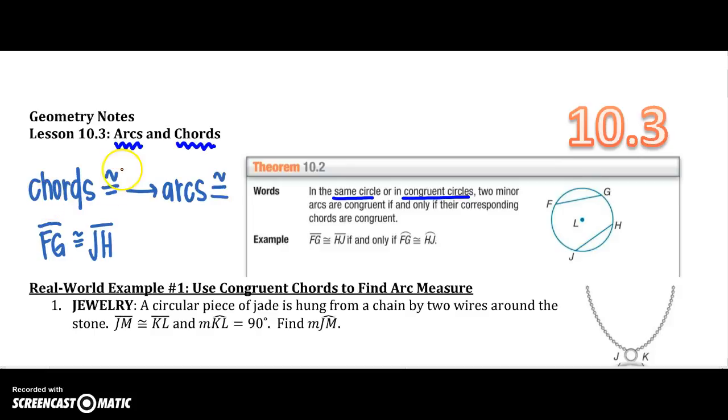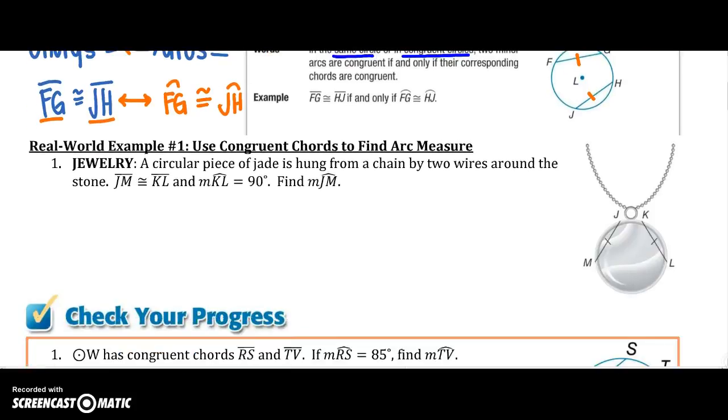So if your chords are congruent, if FG is congruent to JH, then I know that their arcs are congruent. FG arc is congruent to arc JH, and that can go both ways. If their arcs are congruent, then their chords are congruent.